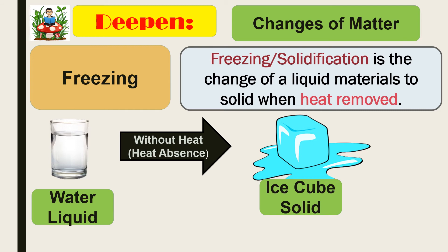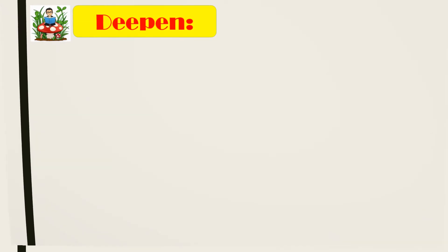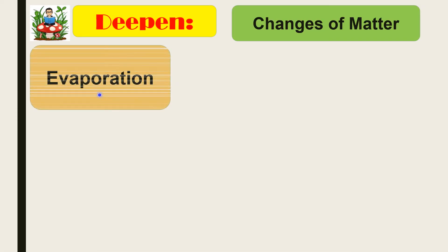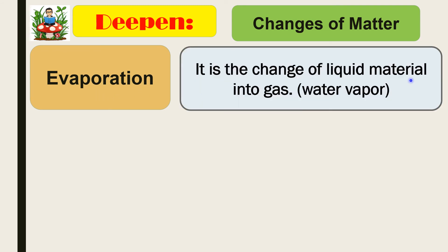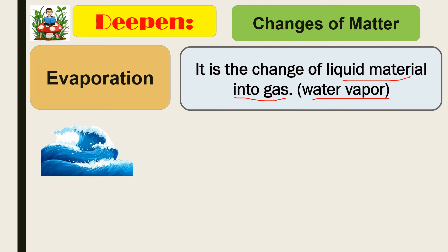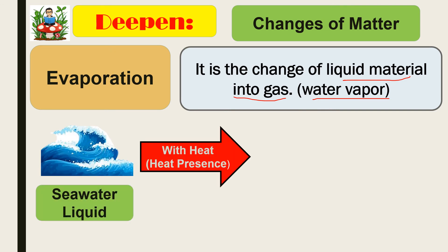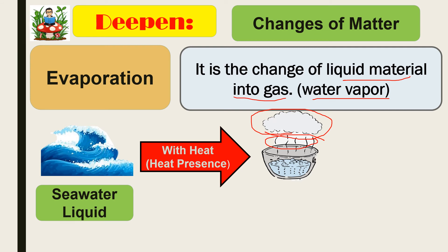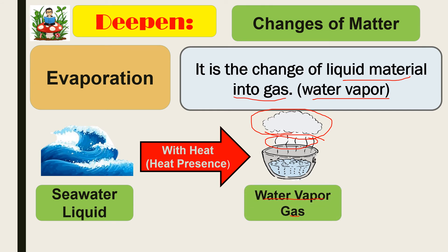Next is evaporation. Evaporation is the change of liquid material into gas, which is called water vapor. This relates to the water cycle — the ocean or seawater, which is liquid, with heat from the sun, will turn into steam or water vapor. That water vapor is also called gas, and it will form clouds if there is enough water vapor.